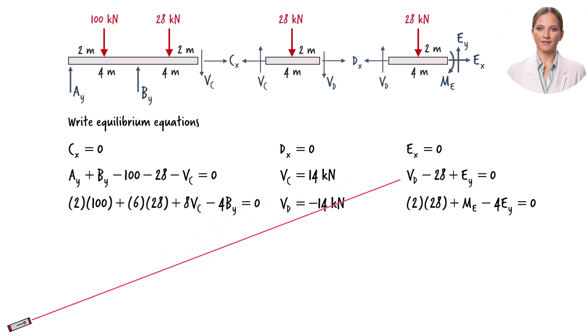Substituting negative 14 for Vd in this equation, we get Ey. Now we can use this equation to determine Me.